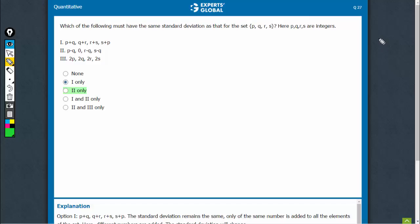See, the underlying concept is that if there is a set, say 5, 10, 15, 20, if the difference between the terms is the same, the standard deviation would remain the same.